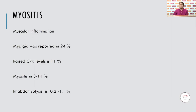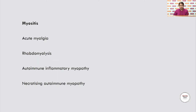Myositis refers to muscular inflammation. Myalgia was reported in 24%, raised CPK levels in 11%, myositis in 3 to 11%, and rhabdomyolysis is fortunately rare, seen in 0.2 to 1.1% of the population. Myositis can present as an acute myalgia, can progress to rhabdomyolysis, or could be an autoimmune inflammatory myopathy or a necrotizing autoimmune myopathy.